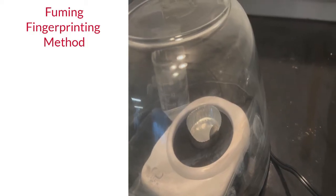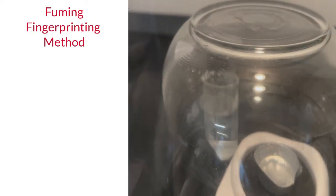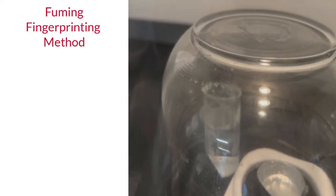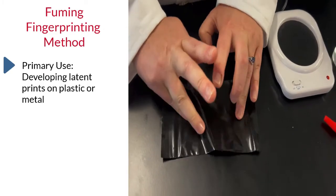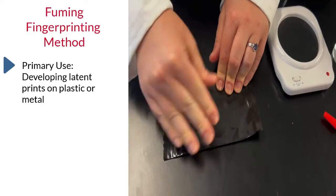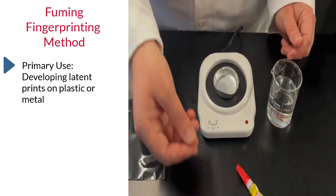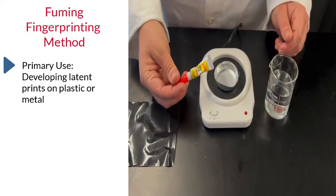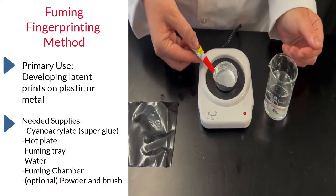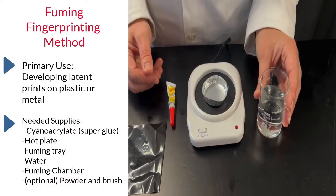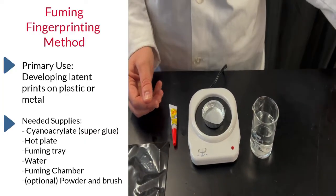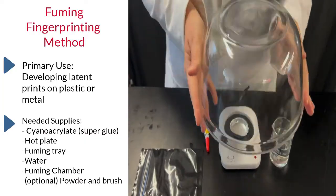The fuming fingerprinting method evaporates cyanoacrylate or superglue to attach and develop prints. The primary use of this method is to develop latent prints on plastic or metal surfaces such as those of common household items. The materials needed to perform this include cyanoacrylate or superglue, a hot plate, a fuming tray, water, and a fuming chamber. In this example, a glass bowl is used for a fuming chamber for easy viewing.